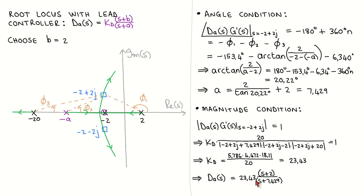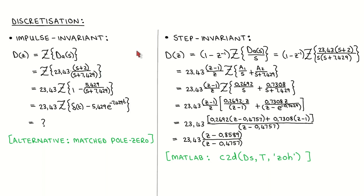Our next aim is to find a digital controller that behaves similarly to this analog controller. The second step in digital controller design by emulation is to discretize the designed analog controller. Since there is no exact way to discretize an analog controller, we have to make some approximations. We have looked at five different approximate discretization methods and we will use all of them to discretize our designed controller. The first discretization method is impulse invariant discretization. The discrete time transfer function is given by the z-transform of the designed continuous time transfer function — converting to the continuous time domain, then sampling, then converting to the z-domain.